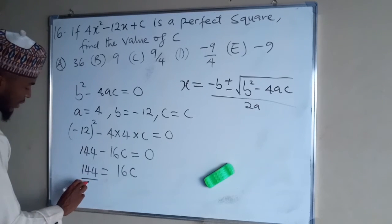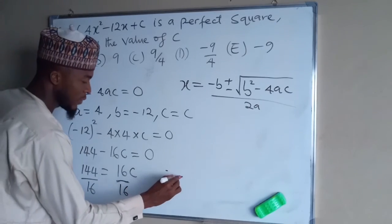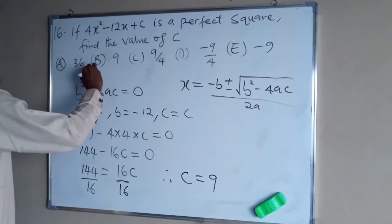You divide both sides by 16. So therefore, C equals nine, which is the option B.